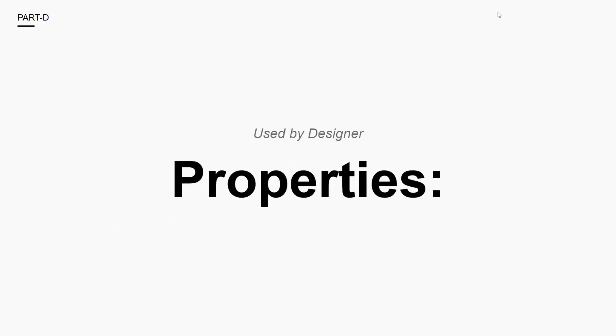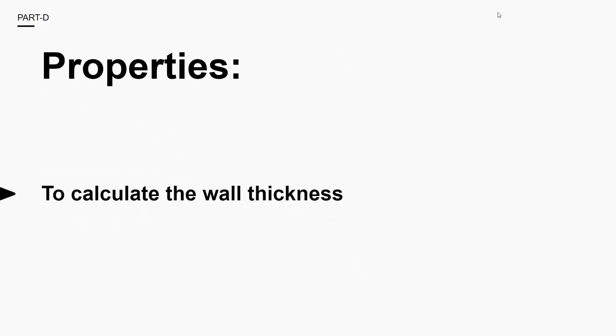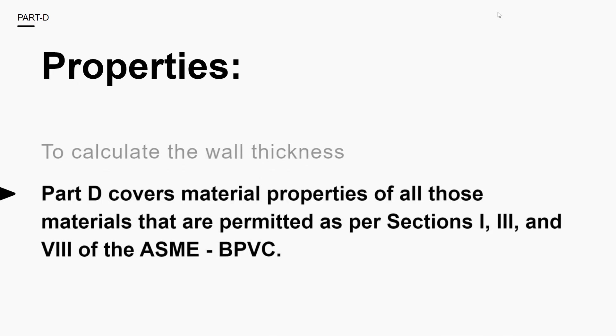In Part D, the properties used by designers are to calculate the thickness of the vessel wall. This part covers the material properties of all those materials that are permitted as per Sections 1, 3, and 8 of ASME Boiler and Pressure Vessel Codes.